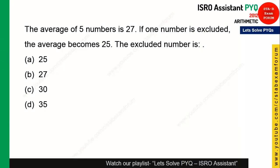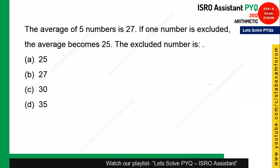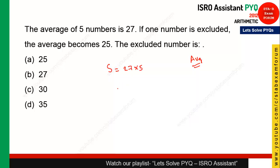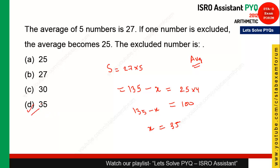The first question is on your screen — time starts now. This question is from the chapter on averages. The average of 5 numbers is 27, so the sum equals 27 × 5 = 135. If one number is excluded, the average becomes 25, so the new sum is 25 × 4 = 100. Therefore, the excluded number is 135 − 100 = 35. Option D is the right answer.